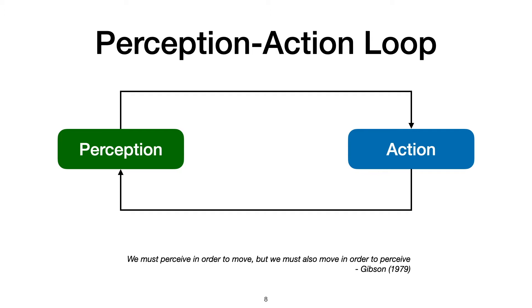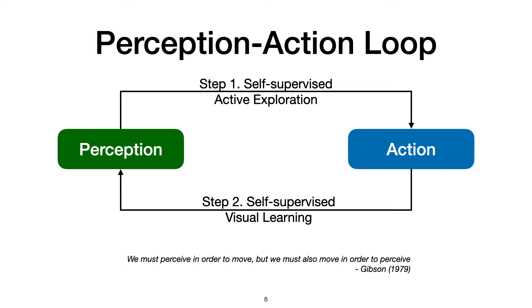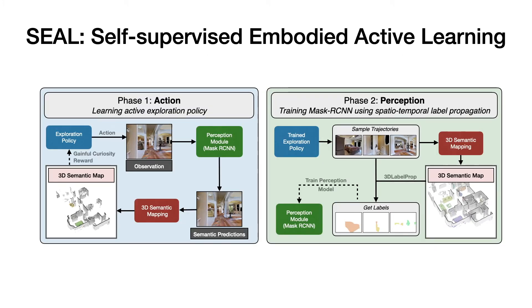This cyclic dependency of perception and action is widely known in psychology literature. In this paper, we propose a self-supervised framework for closing the action-perception loop for training embodied agents. We train a self-supervised active exploration policy which bootstraps from internet perception models to explore the environment efficiently and collect relevant embodied images. These images are labeled in a self-supervised fashion using spatio-temporal 3D consistency and used to improve the perception model.